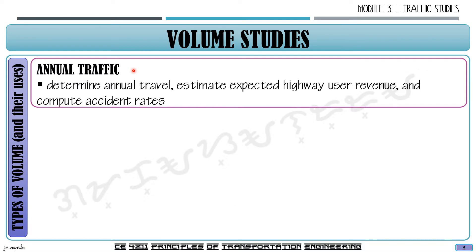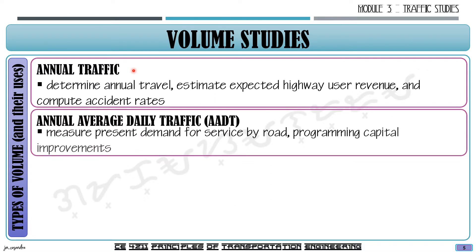The next type of volume is the Annual Average Daily Traffic, or AADT, which is a measure of the present demand for service by road. It is used for programming capital improvements. For accident rates, we use annual traffic; for improvements and geometric design, we use AADT.